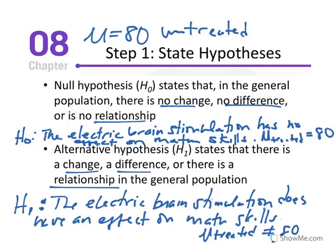A hypothesis test is a formalized procedure that follows a standard series of operations. Researchers understand this standardized method and can evaluate results from their own and others' studies. We present hypothesis testing as a four-step process used throughout the rest of the textbook. The following example will walk through that four-step process to provide a concrete foundation for conducting a hypothesis test.